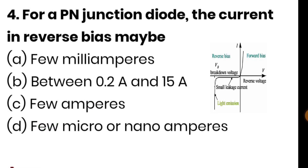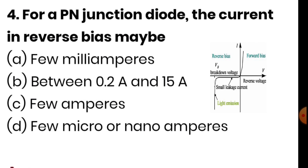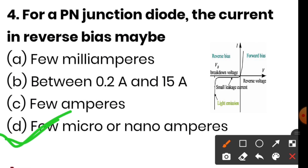The next question: for a PN junction diode, the current in reverse bias may be — option A is milliampere, option B is 0.2 ampere, option C is a few ampere, and option D is a few micro or nano ampere. The correct answer is option D — a few micro or nano ampere. In reverse bias, the current is on the order of 10⁻⁶ to 10⁻⁹ ampere, i.e., micro to nano ampere.